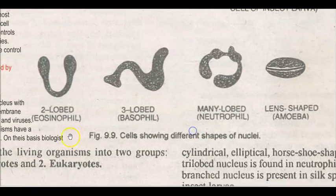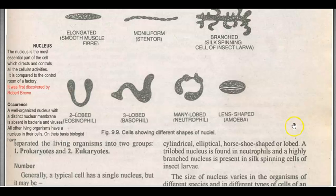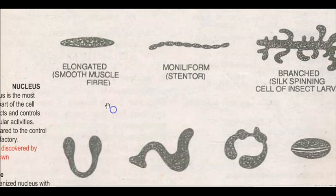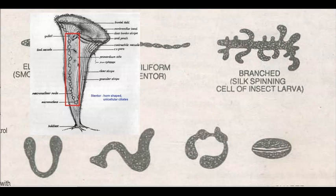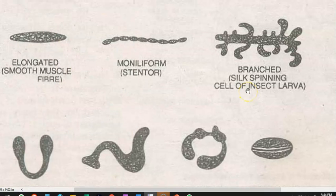This image shows a bilobed nucleus condition in the eosinophil, more than three lobes in the basophil, and more than three lobes — the condition of the neutrophil. A lens-shaped nucleus can be present in amoeba cells. Smooth muscles have an elongated nucleus, whereas a moniliform kind of nucleus is present in Stentor cells. Stentor is actually a ciliate, a kind of protozoa.